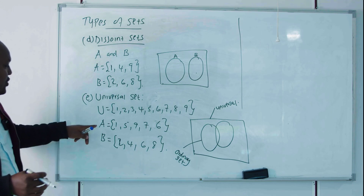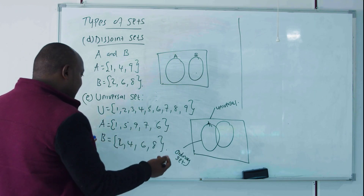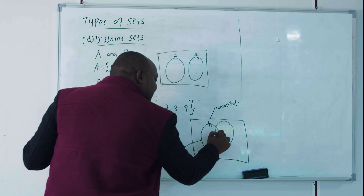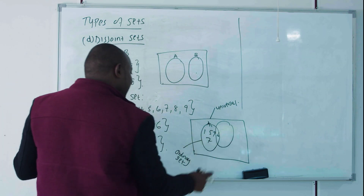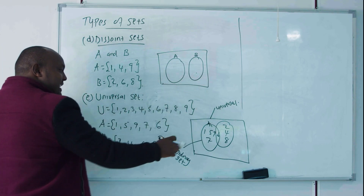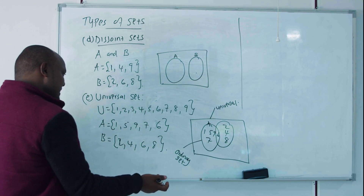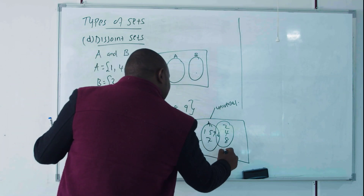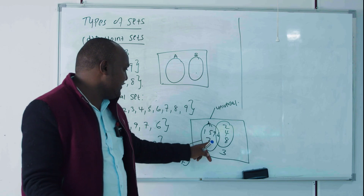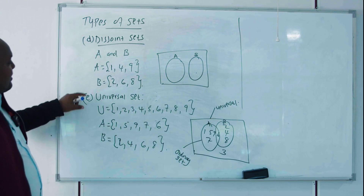Say set A = {1, 5, 9, 7, 6} and set B = {2, 4, 6, 8}. In the Venn diagram, the intersection point where they share element six is shown where the circles overlap. The elements {1, 5, 9, 7} are only in A, and {2, 4, 8} are only in B. The number three, which is in the universal set but not in A or B, appears outside both circles.